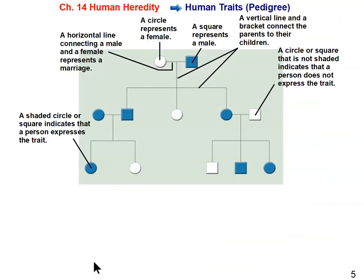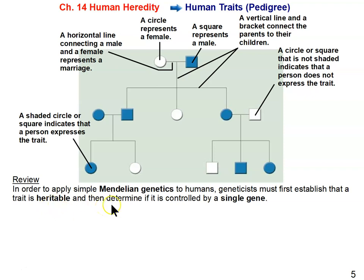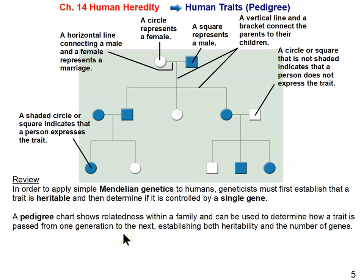As we learned in the Mendelian genetics unit, it's easy to study genetics in peas and fruit flies, but more difficult with humans because the human lifespan is long and you can't do any mating experiment you want. What we use largely are pedigrees to study human inheritance. To apply simple Mendelian genetics to humans, geneticists must establish that a trait is heritable and determine if it is controlled by a single gene. A pedigree chart showing relatedness within a family can be used to determine how a trait is passed from generation to generation.